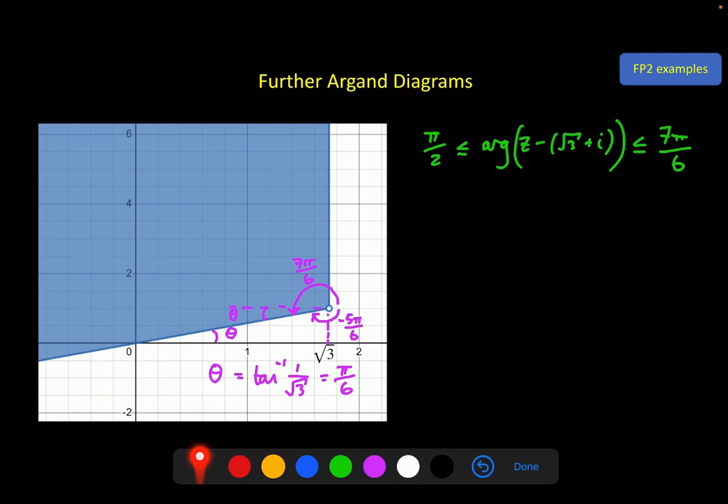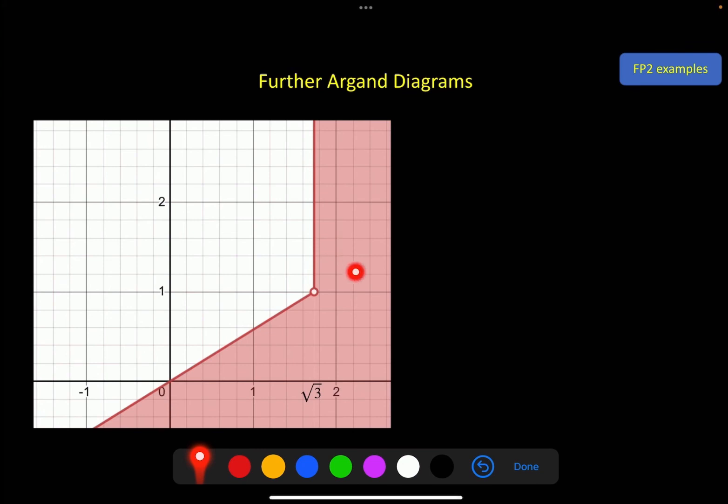Next example is the same point, but the opposite side shaded. So we've got the same angles, the same lines, same setup, and now I should use the negative because this is going to be my smaller one, and it's going to go round to pi by 2. So in this case, I will use minus 5 pi by 6. And it's a solid line, argument of z minus root 3 minus i less than or equal to pi by 2.